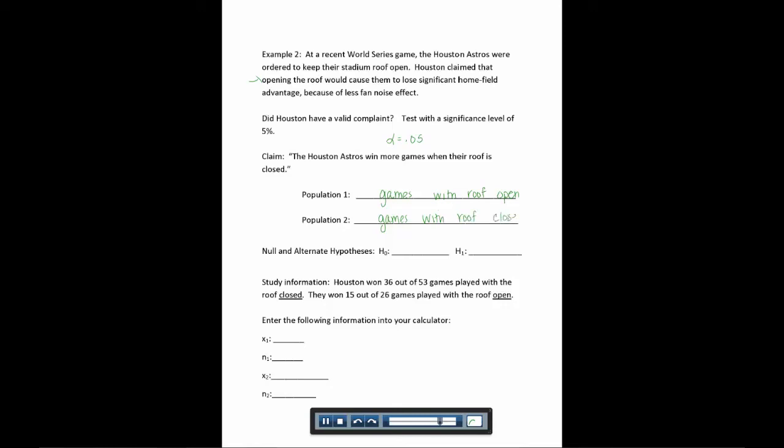And we'll call population 2, the games they play with the roof closed. Now we want to talk about the percentage of winning, and we're saying that they win less with the roof open. So their proportion of winning, we'd say P1 is less than P2 here. And so our null is always P1 equals P2.